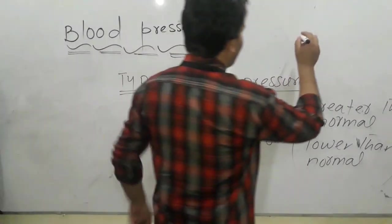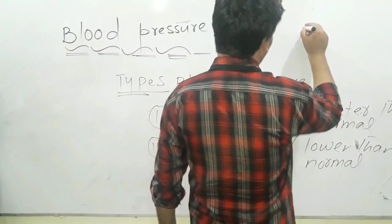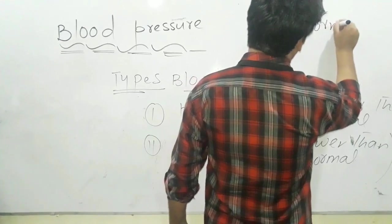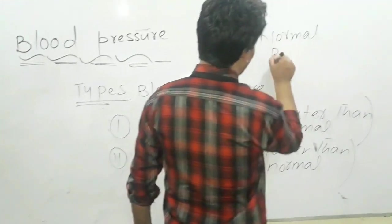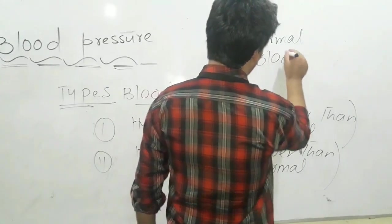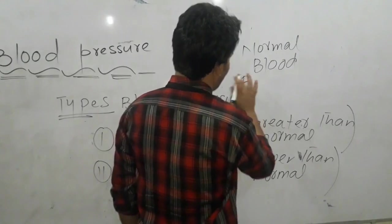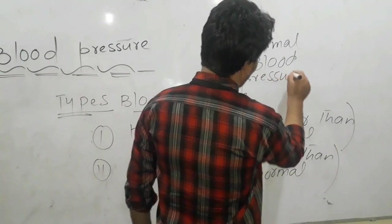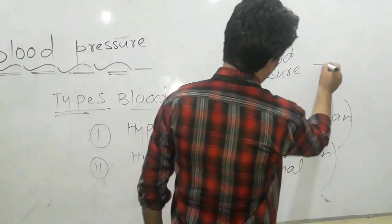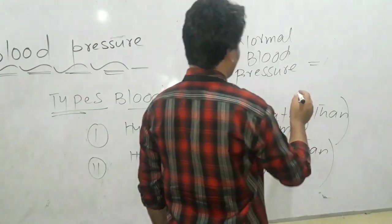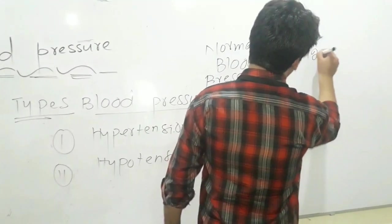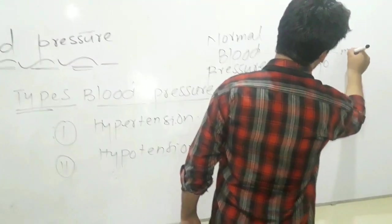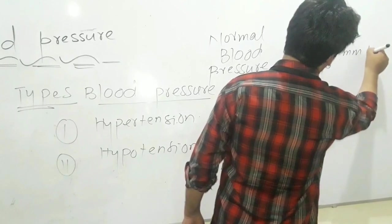What is the normal range of blood pressure? Normal blood pressure is 120 divided by 90 mmHg.